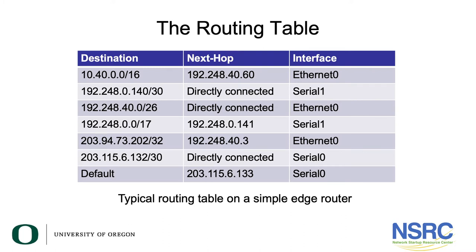As you can see on the screen, this is an example of a routing table. It will consist of a destination address, the next hop, and also the interface to be used for forwarding the packet to the destination address. This routing table has seven different entries. You have the 10.40.0.0/16 network, and you can see that the last line is pointing to the default route.